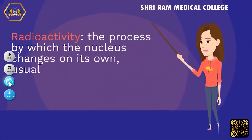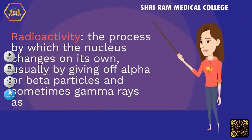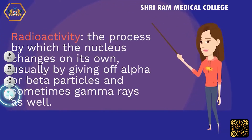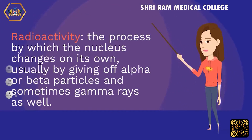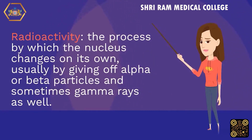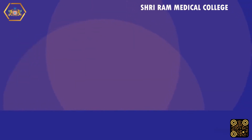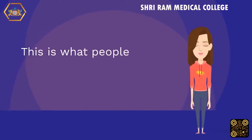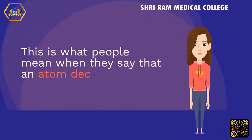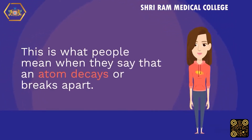Radioactivity: the process by which the nucleus changes on its own, usually by giving off alpha or beta particles and sometimes gamma rays as well. This is what people mean when they say that an atom decays or breaks apart.